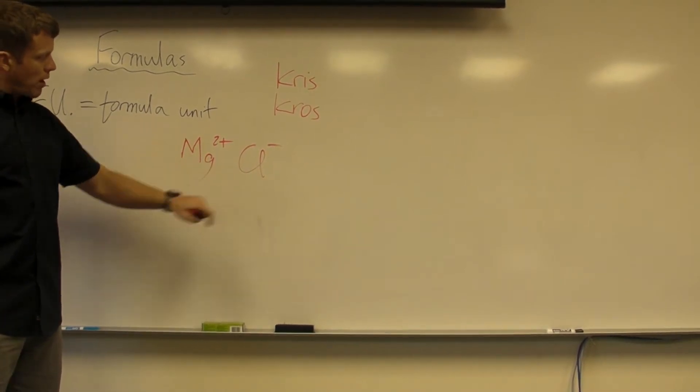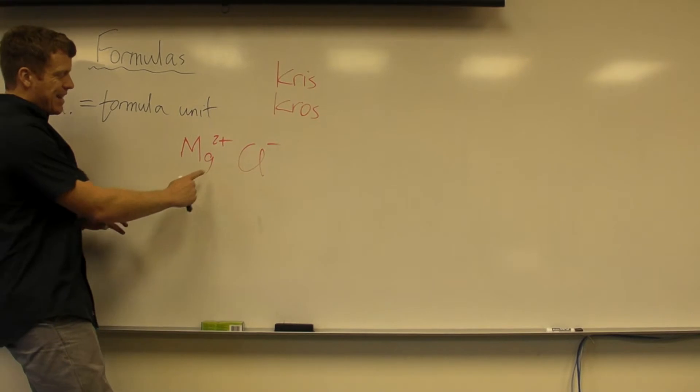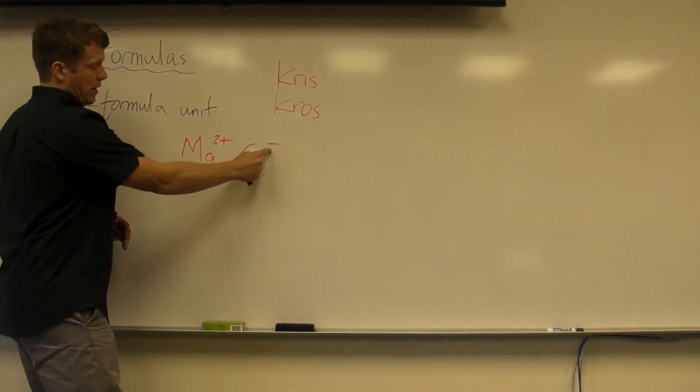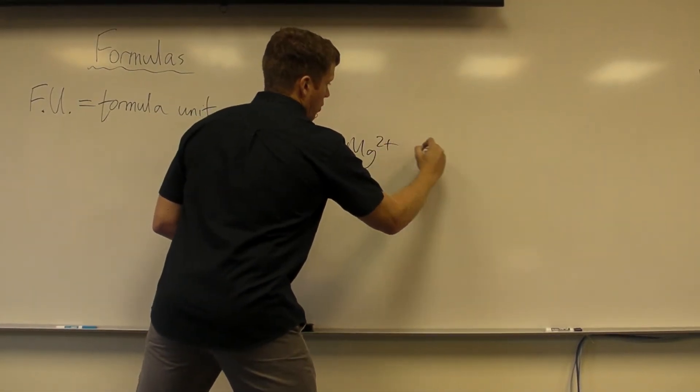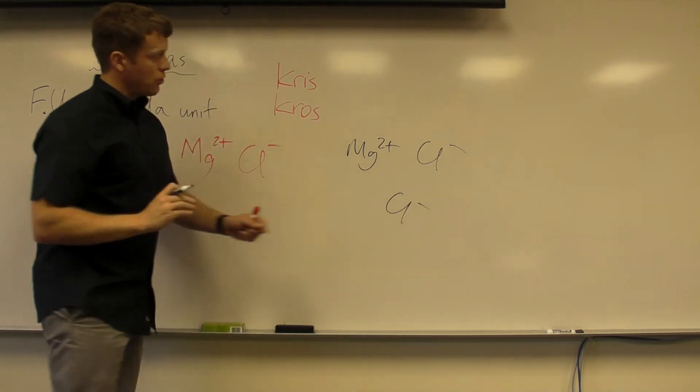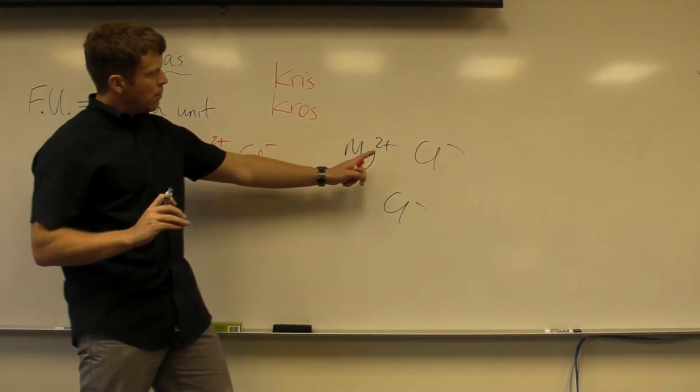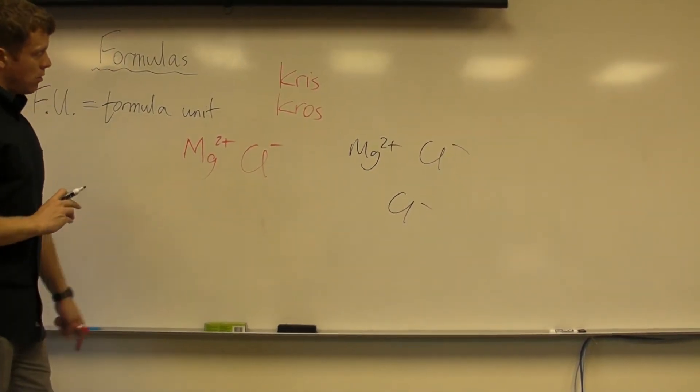So you've got magnesium and chloride bonded together. You could look at these two and say to yourself, I need two of these for every one of these because this is twice the value. So maybe scratch work or in your head, you're thinking, alright, so if I have two chlorides, that balances out the plus two. Plus two minus one minus one gives you a net charge of zero, so that all balances out.